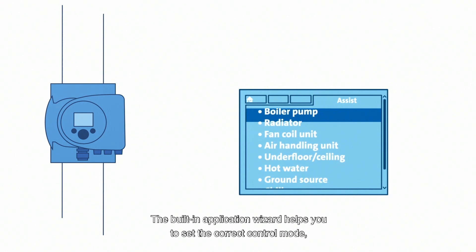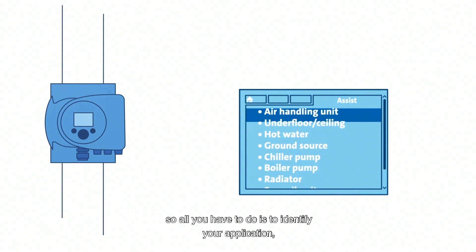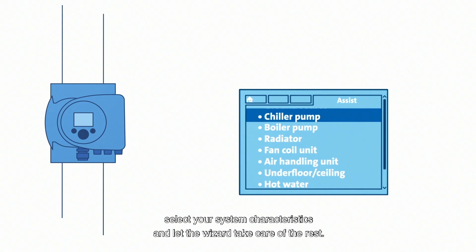The built-in application wizard helps you set the correct control mode. All you have to do is identify your application, select your system characteristics, and let the wizard take care of the rest.